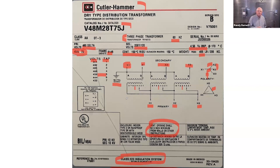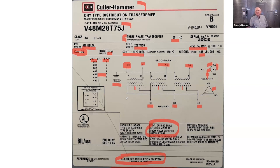Something else we would certainly want to do when connecting a transformer into a system: always get a phase rotation meter, follow your safe work practices, and check for proper phase rotation — both on the incoming primary side and the secondary side once you connect the transformer up. If not, your three-phase motors are going to run backwards, and you can have all sorts of problems in your distribution system.